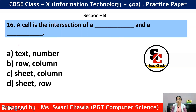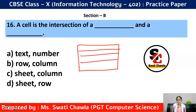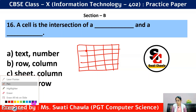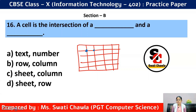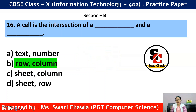Question 16: A cell is the intersection of dash and a dash. In a spreadsheet, we have rows and columns. The intersection points where a row and column meet are called cells. The options are: Text or Number, Row or Column, Sheet or Column, Sheet or Row. The correct answer is option B — Row and Column. A cell is the intersection of a row and a column.